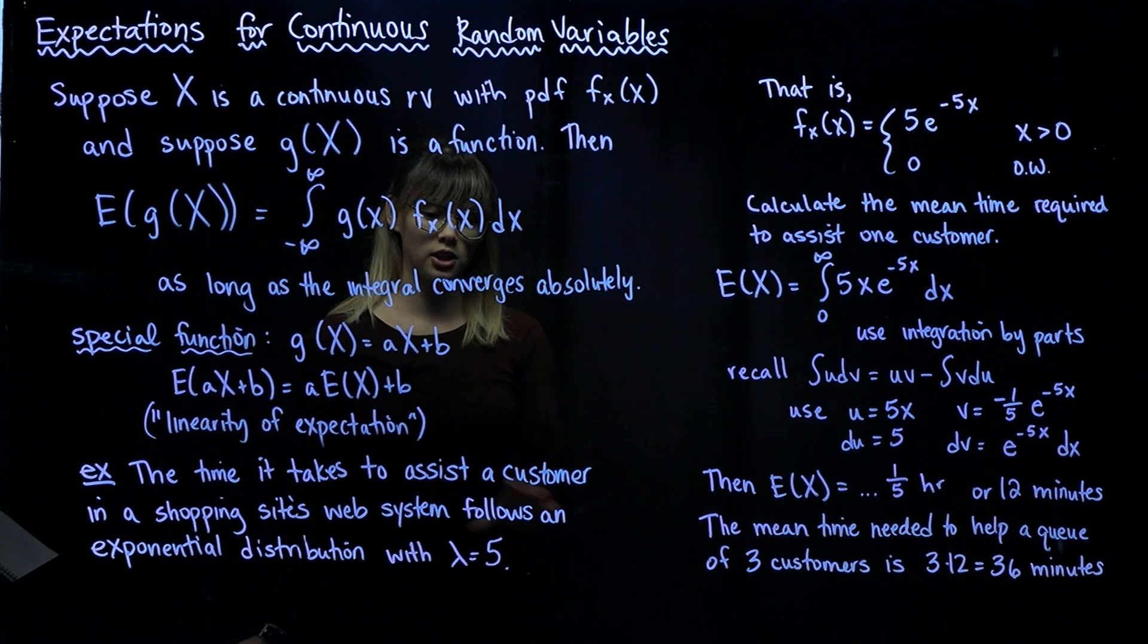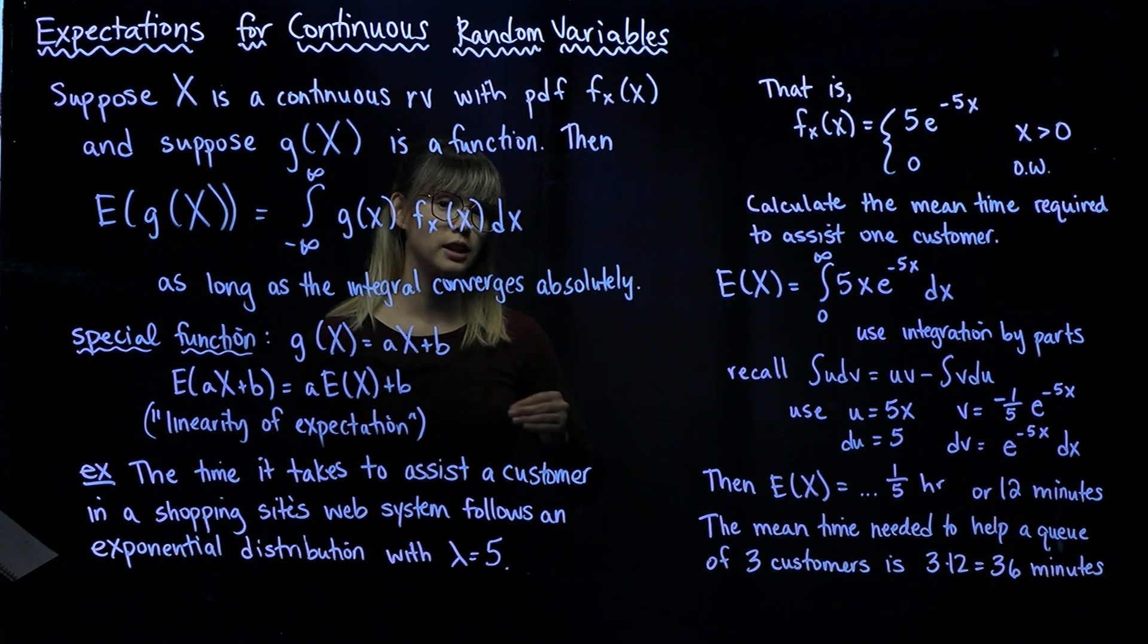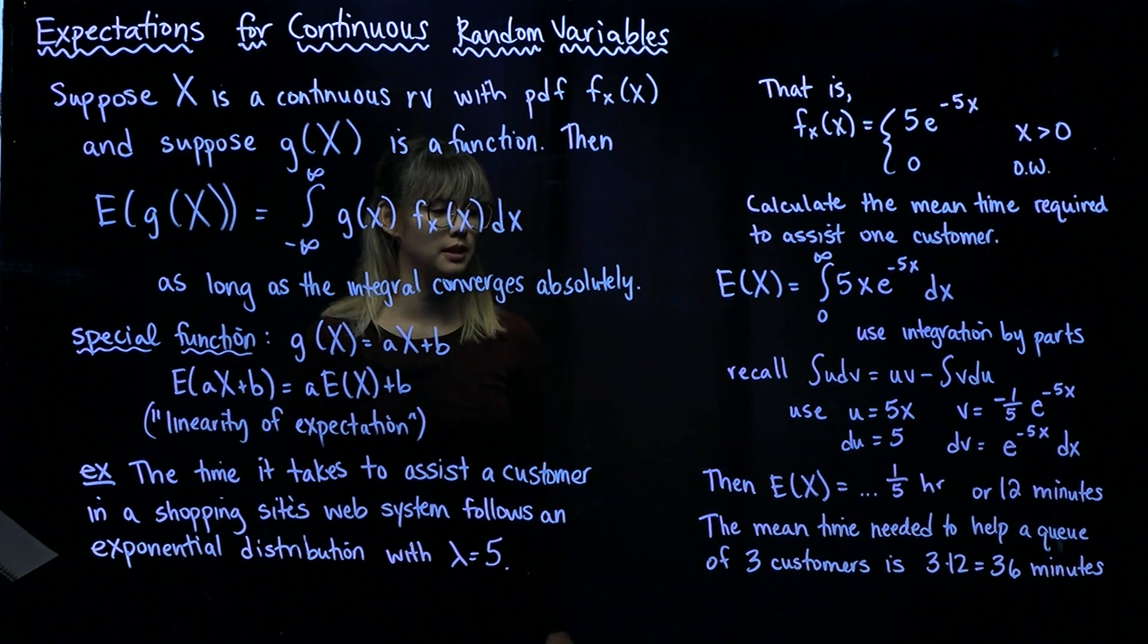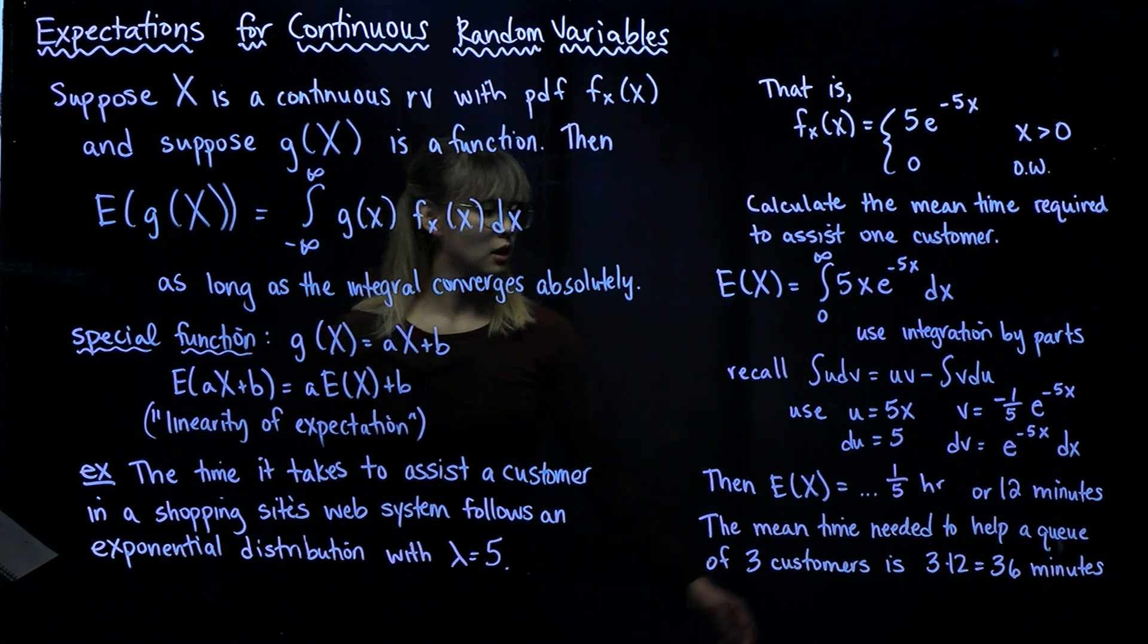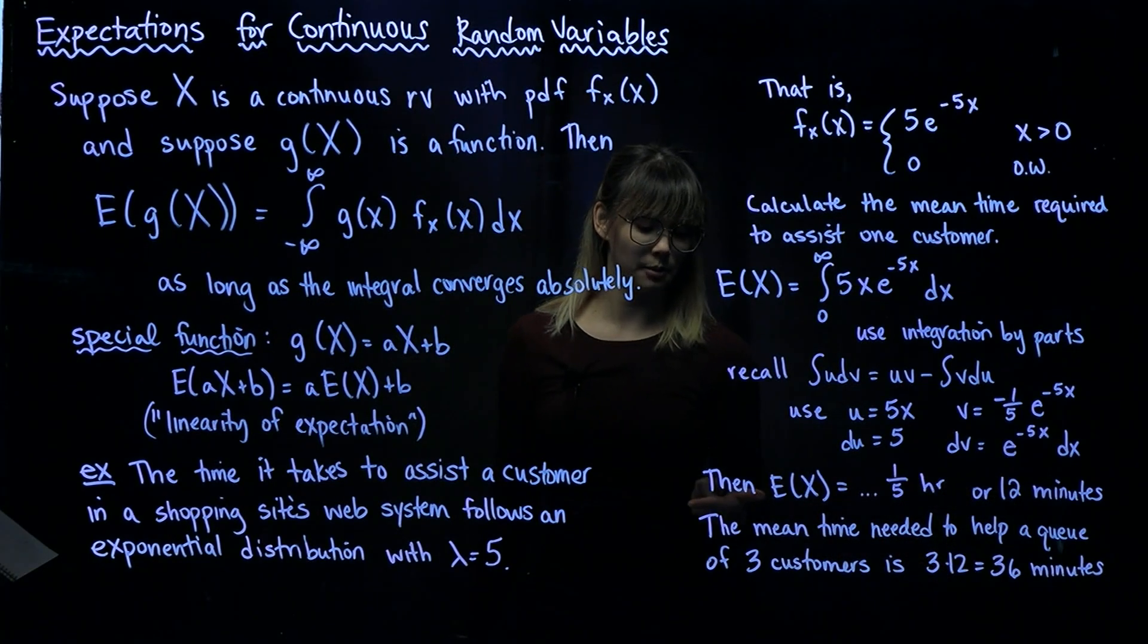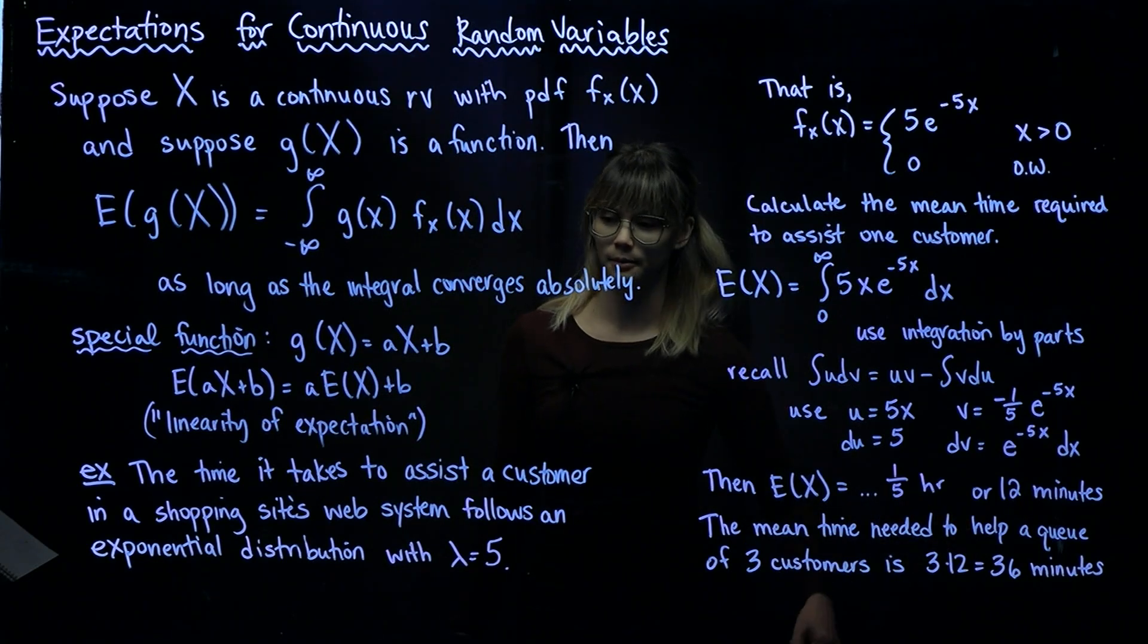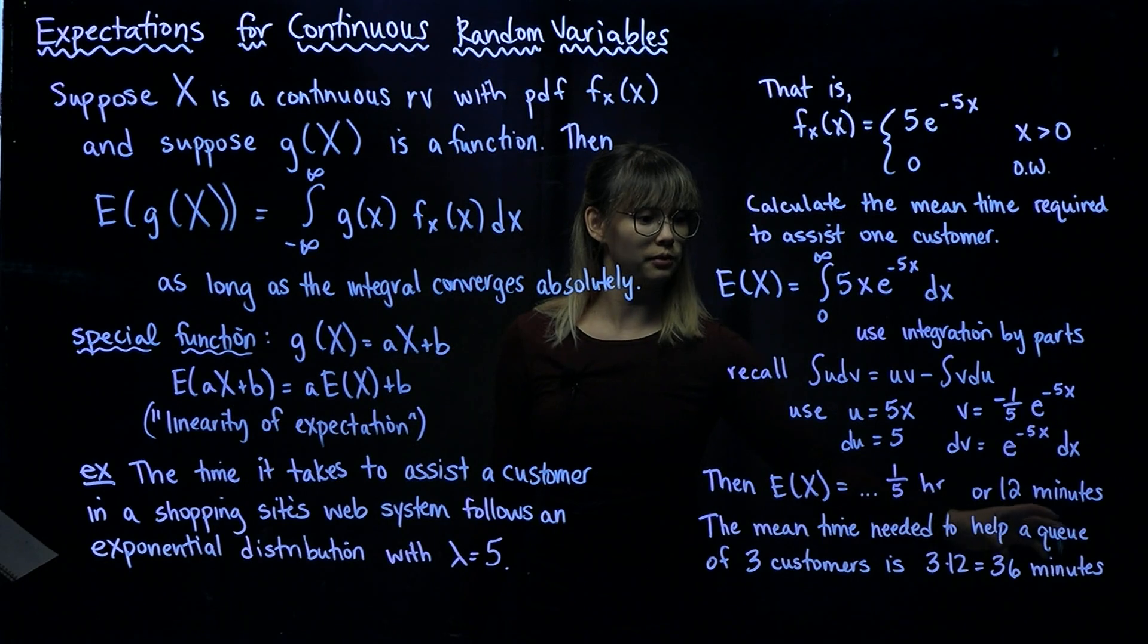But if you're working in this chat system, probably you have more than one client to help. Imagine that you have three customers in your queue and you're wondering how long it's going to take to get through these three customers. Well, the mean time needed to help these three customers is going to be 3 times 12 minutes. It takes 12 minutes to help one customer, 12 minutes to help the next, 12 minutes to help the next. So that results in 36 minutes, which intuitively makes sense.